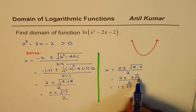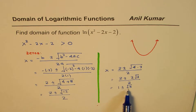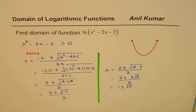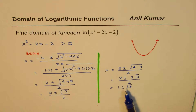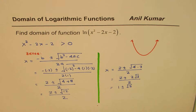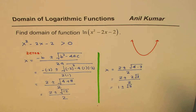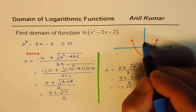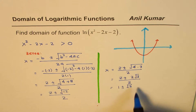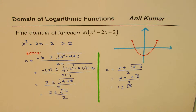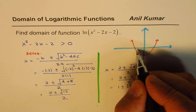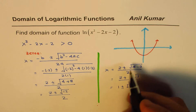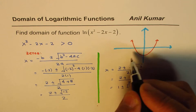So those are the zeros of the function: 1 + √3 and 1 - √3 — two zeros symmetrically placed. We can sketch this upward-opening parabola with these two zeros. One zero is at 1 - √3 and the other is at 1 + √3, giving us two roots for the quadratic.